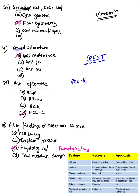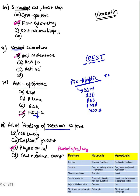They asked about anti-apoptotic genes. Pro-apoptotic genes — remember the mnemonic: BIM, BID, BAD, PUMA, NOXA. Anti-apoptotic: BCL-2 loss leads to increased apoptosis, so the anti-apoptotic gene is MCL-1.